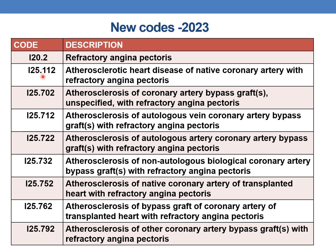The first new combination code is I25.112, which deals with atherosclerotic heart disease of native coronary artery with refractory angina pectoris. This combination code must be used when CAD is present with refractory angina. The next new code is I25.702 — atherosclerosis of coronary artery bypass graft unspecified with refractory angina pectoris. Then I25.712 — atherosclerosis of autologous vein coronary artery bypass graft with refractory angina pectoris.